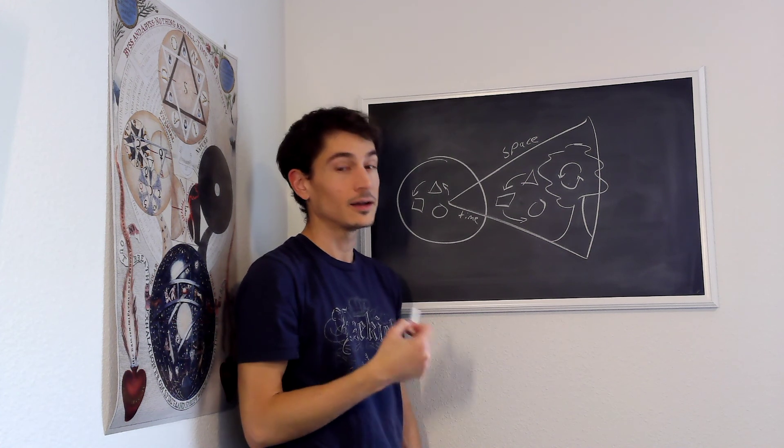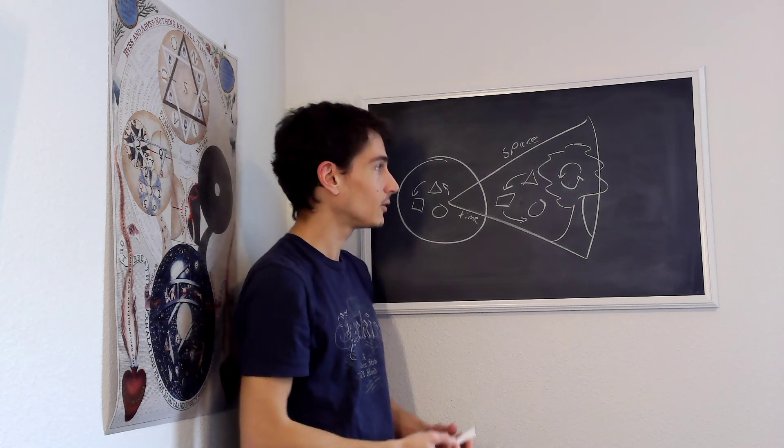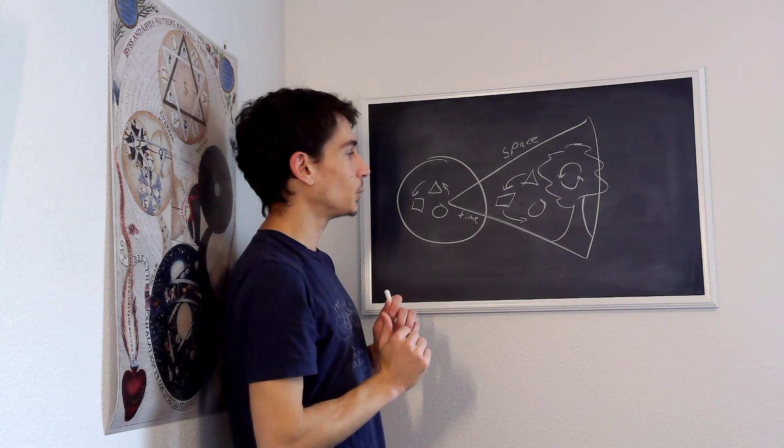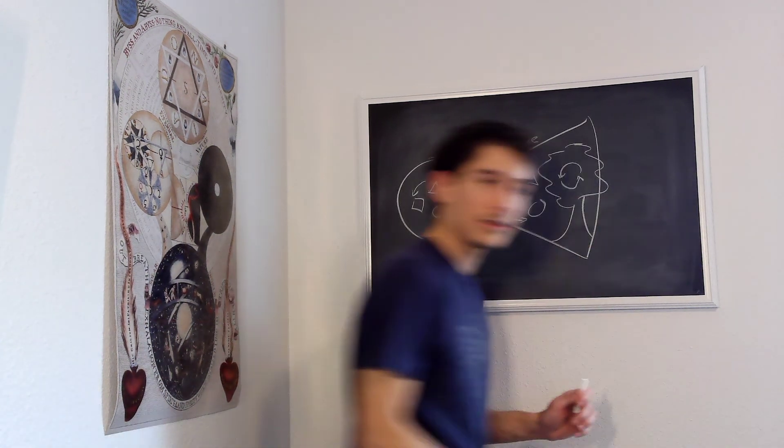Schelling and Goethe, as we will see, did think there could be such a genius. So this is the Kantian situation. Let's move on to Fichte.